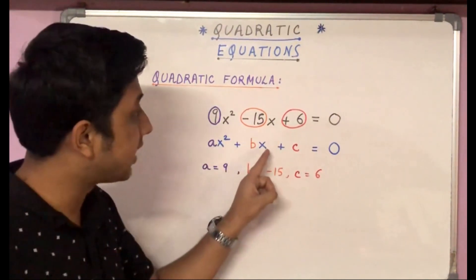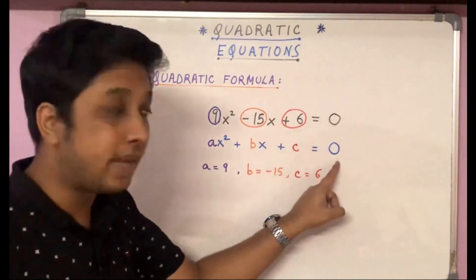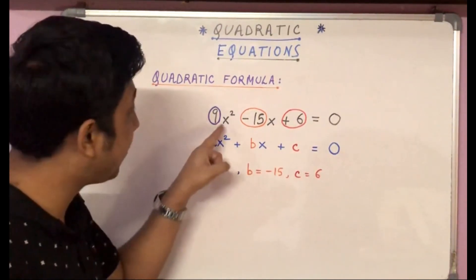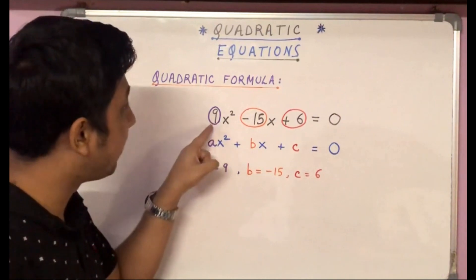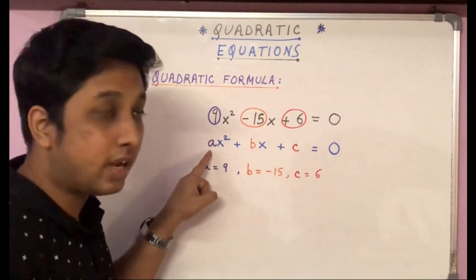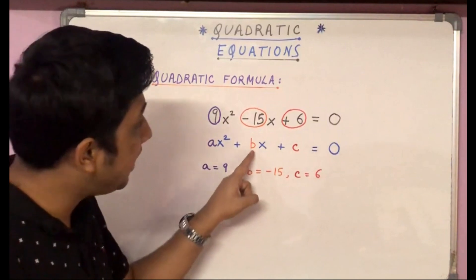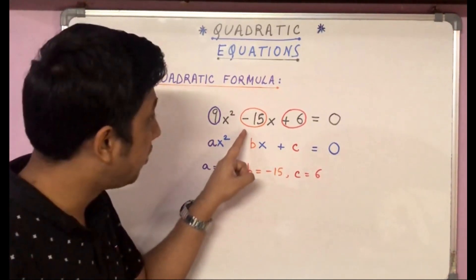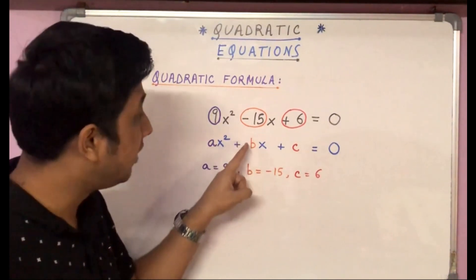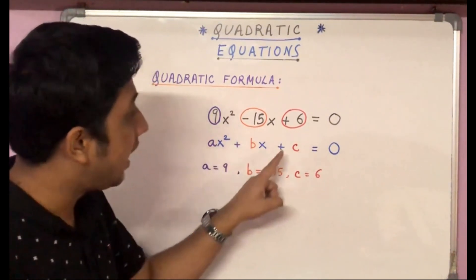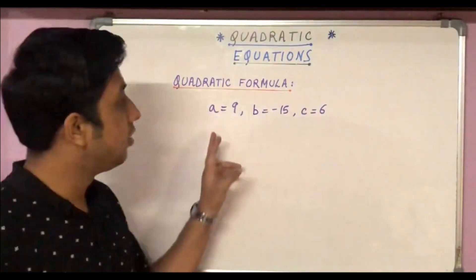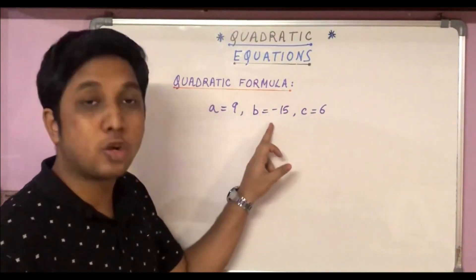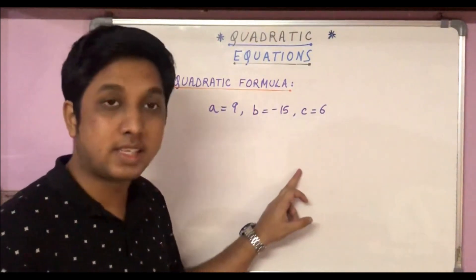On comparing, we get that a = 9, the coefficient of x². So a = 9. Similarly, b = -15. We have to take the sign also. b = -15. And similarly, c = 6. So the values of a, b, and c that we got were a = 9, b = -15, and c = 6.